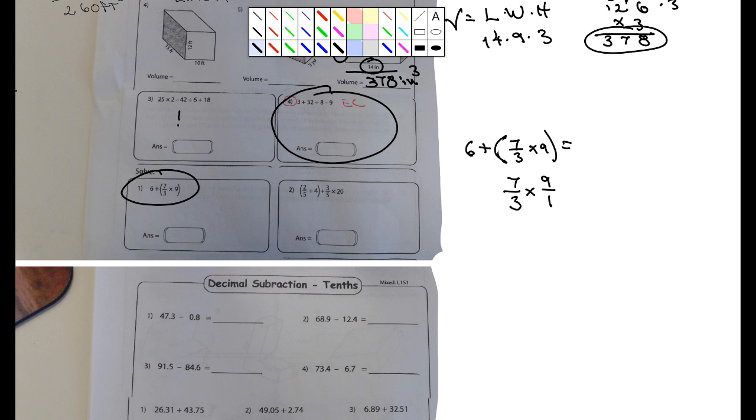Well here we can do some cross-canceling. I'm looking at three and nine here, so there's a number that will go into both of them evenly. Three goes into three once, three goes into nine three times. Then we just multiply straight across here because we can't do any more cross-canceling. So seven times three is 21, one times one is one.